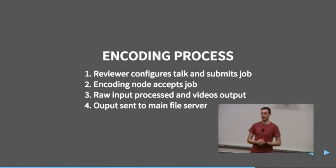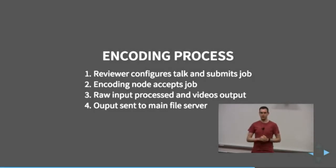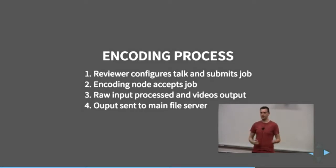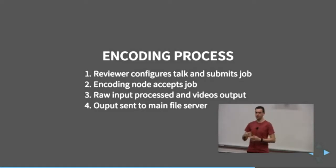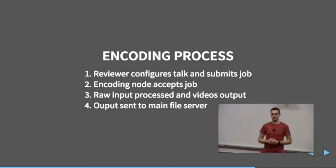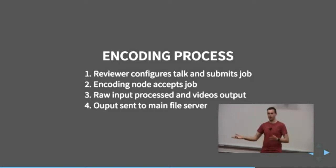How does encoding actually work within this system? First, while the talk is going and the person is recording and mixing, they're writing down little notes about what's actually happening. We know from the conference schedule that a talk starts and ends at certain times, so we go and look for all the video files for that talk and match them up. A reviewer has to confirm which files are included in that talk, configure a few options, and then submit that to be encoded. One of our nodes listening to the queue will accept that, start processing the job, output the videos in the formats we want, and sync them back to our file server for uploading.